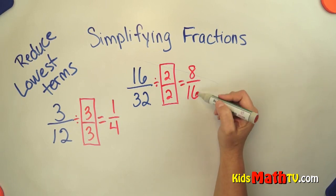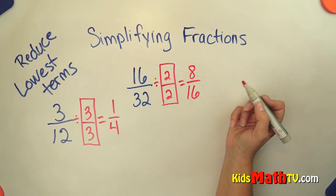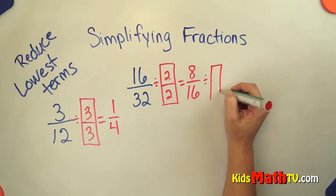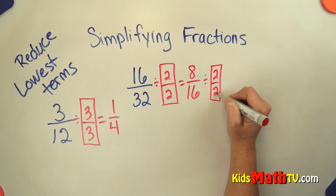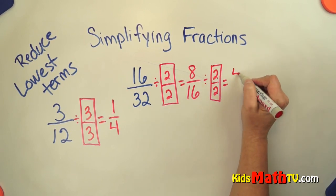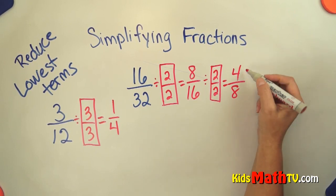Now I have to check again. Is there a number that will divide both 8 and 16? There is. I can divide by 1 again. See they're both even again so I could divide by 2 over 2. 8 divided by 2 is 4. 16 divided by 2 is 8. Now I check again.